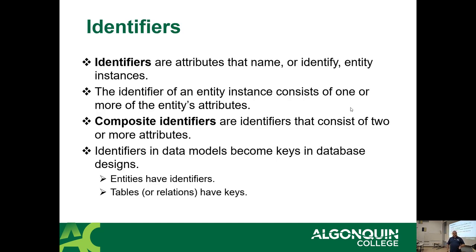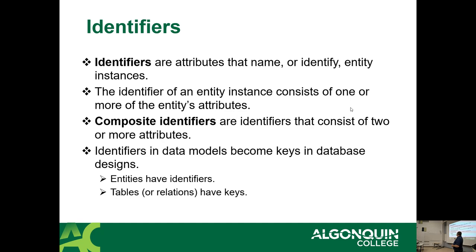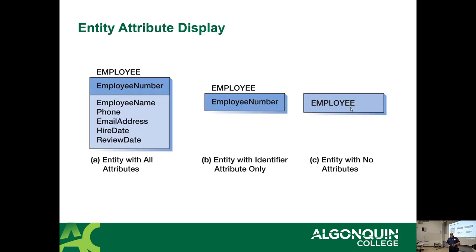Why are we doing identifiers again? On the previous slide, the employee number is the identifier — it's basically an attribute used to uniquely identify an instance. You can draw an entity three different ways: just the entity alone without attributes, an entity defined with just the identifier, or the fully described version. There are just different flavors of the same thing depending on how complex your diagram is.